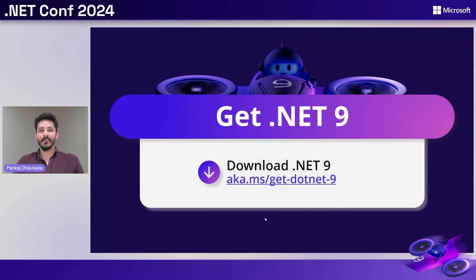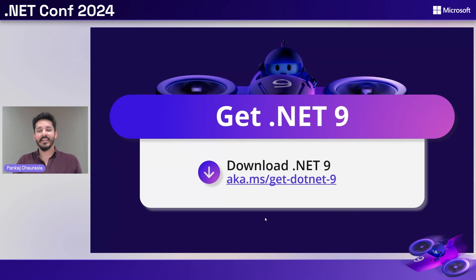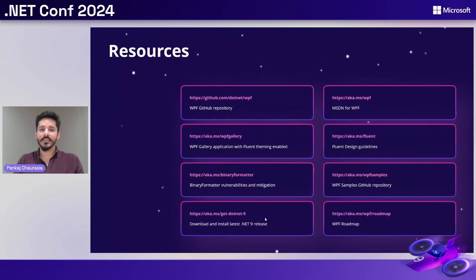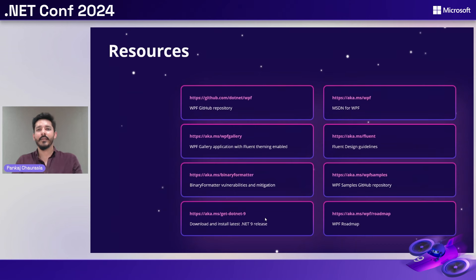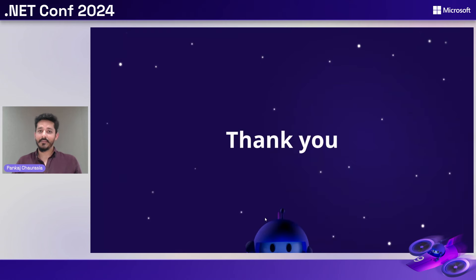That covers all the content I had for WPF in .NET 9. As next steps, we would want you to try it out. Let us know what different applications you'd be building with .NET — we cannot wait to hear from all of you. Here are some resources that can help you get started. Should you encounter any issues, you can file issues on our GitHub repo and we'll respond and get to fixing that as soon as possible. I'm very excited to share all these updates with you, and with your support, we can make WPF the next best framework out there. Thank you so much.